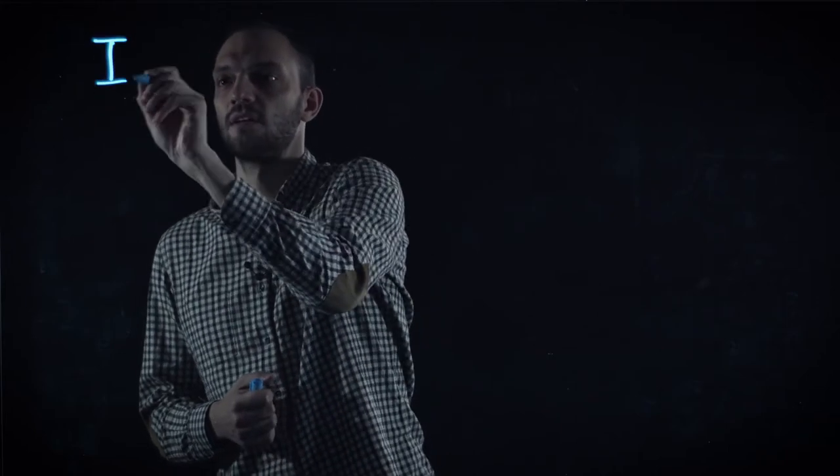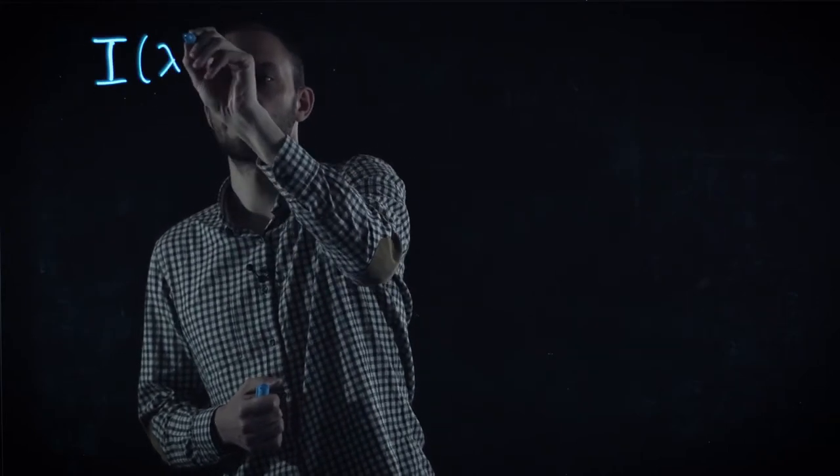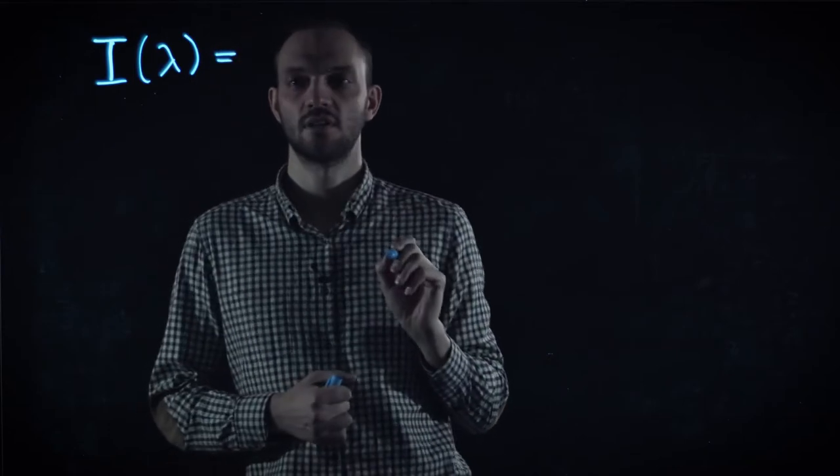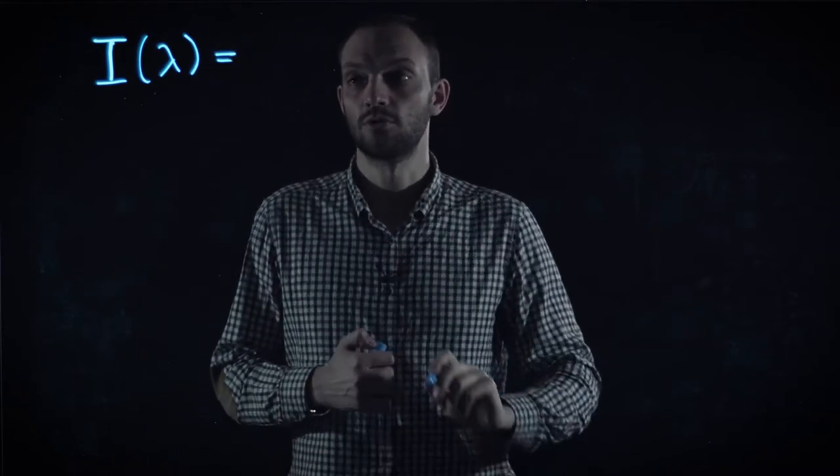Let us now discuss some slightly more elaborated examples of the saddle point approximation. So let us consider the following integral with a large parameter lambda, which is assumed to be positive.